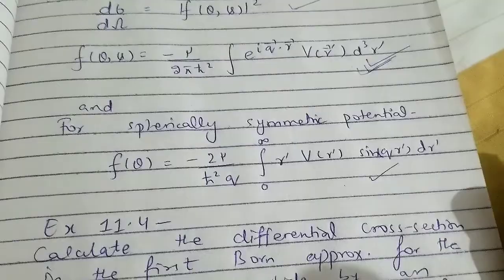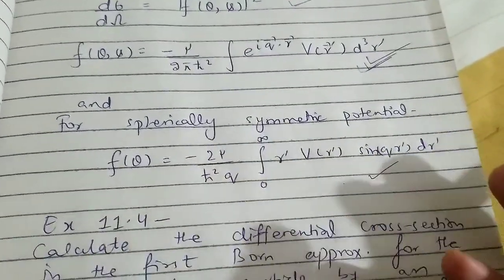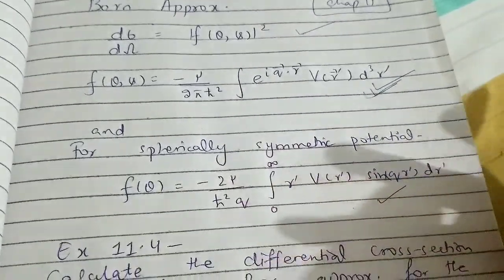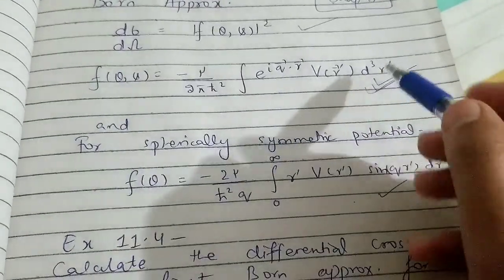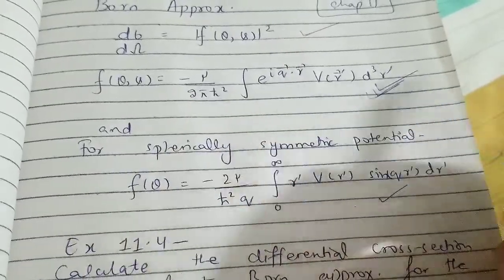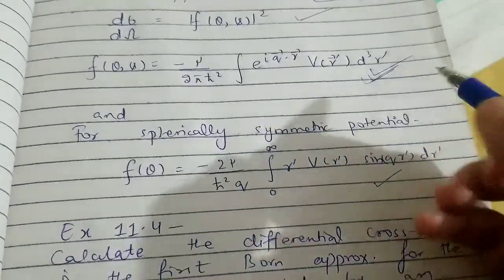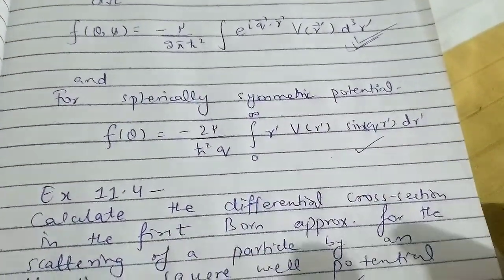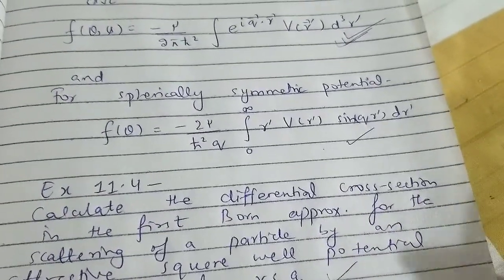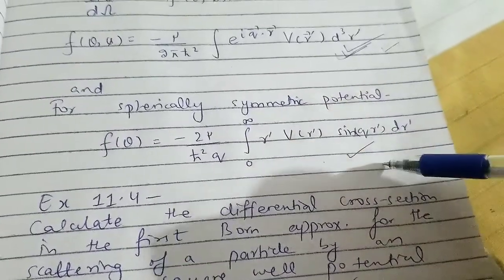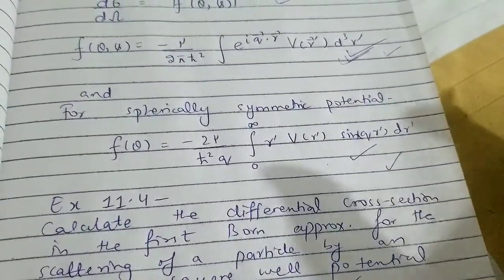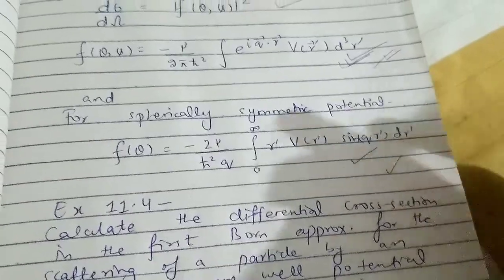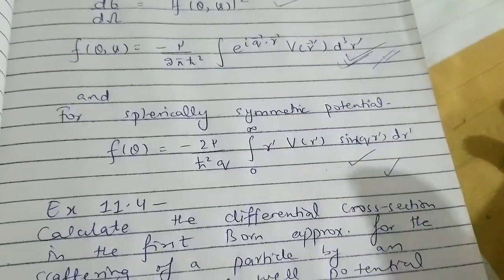Here r-vector shows that the potential is not necessarily spherically symmetric — it could be non-spherically symmetric or any general potential. But this other formula is specifically for the spherically symmetric potential. When we assume V of r is spherically symmetric, we can express the integral as a spherical volume integral, which simplifies to this one integral. So if you have a spherically symmetric potential, you have two choices of formula to use; but if the potential is not spherically symmetric, you must use only the general formula.